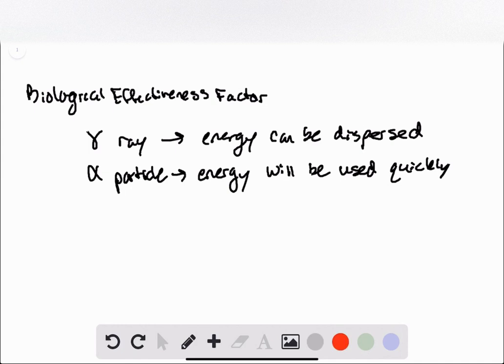And what the biological effectiveness factor takes into account are these differences between these types of radiation. And for that reason, we could predict that alpha particles will have the highest biological effectiveness factor because it can do the most damage with the same relative amount of radiation.